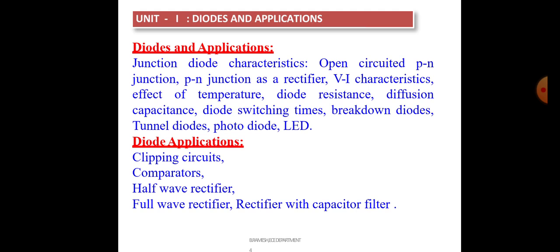What is P-type material and what is N-type material? P-type material means if you add trivalent impurities to a pure semiconductor, it becomes P-type material. P-type material has majority charge carriers as holes and minority charge carriers as electrons. P-type material contains acceptor ions, because we are adding trivalent impurities.